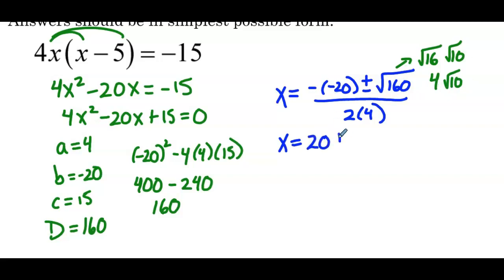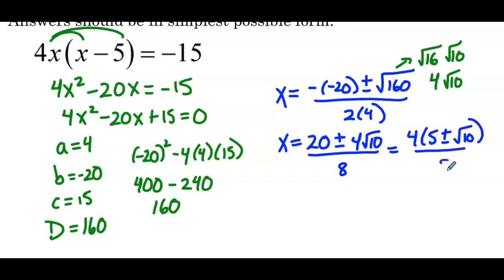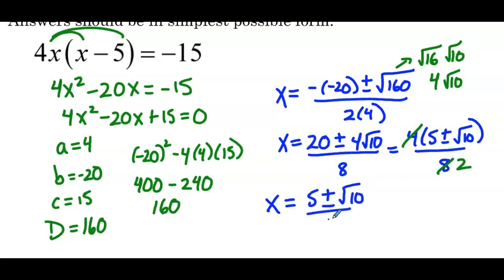So we have positive 20 plus or minus 4 times the square root of 10, all over 8. The greatest common factor in the numerator is 4, so we factor that out. The 4 and the 8 simplify, giving us x equals 5 plus or minus the square root of 10 over 2. We'll leave our answer in that nice condensed form: x equals 5 plus or minus the square root of 10, over 2.